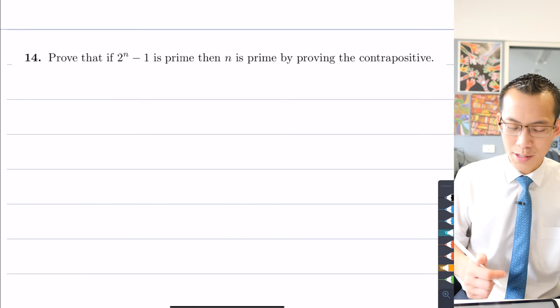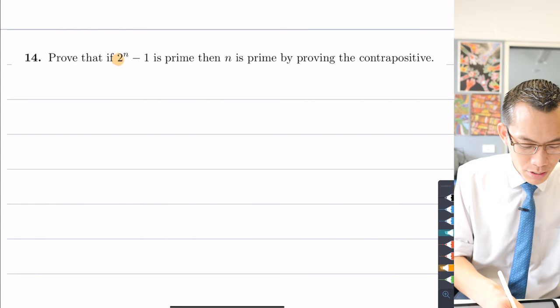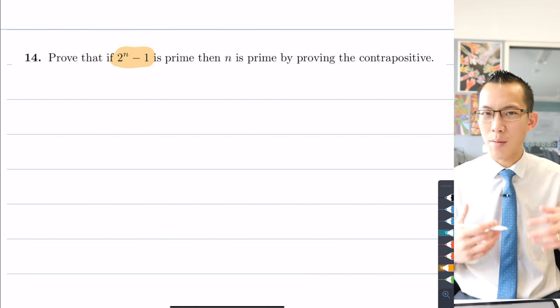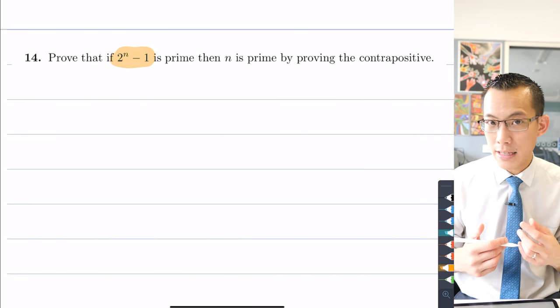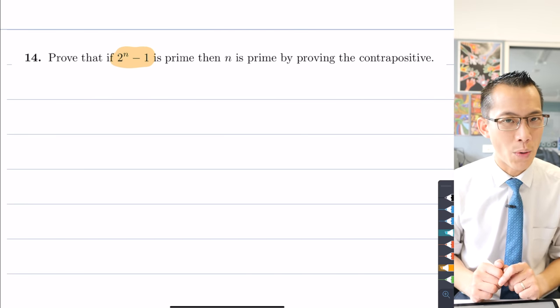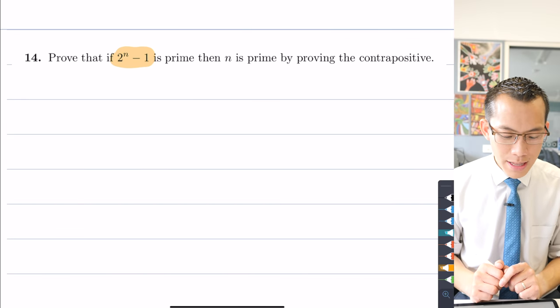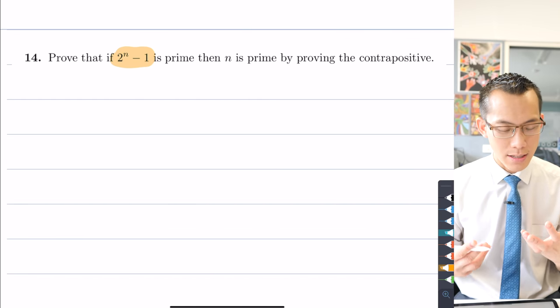For starters, the reason why I said this is a cute question is that 2^n - 1, this is not just some random result. 2^n - 1 obviously it's an odd number because 2^n is always going to be even, but 2^n - 1 often is a prime number.